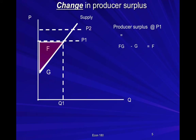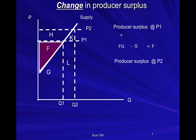If the price of the product goes up, some firms will enter the market, or an existing firm will increase the quantity it supplies. Since the supply curve is upward sloping, that reflects that marginal costs are rising as firms produce more. The producer surplus at price P2 is the total revenue — price times quantity, areas H, K, F, G, L — minus the total variable cost of producing Q2, the area under the supply curve, or area K, G, L. So the new producer surplus is H, F — also a triangle, analogous to area F, just bigger, reflecting the higher price.